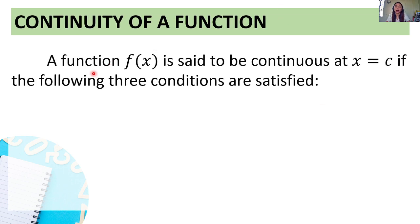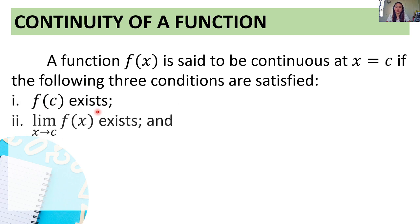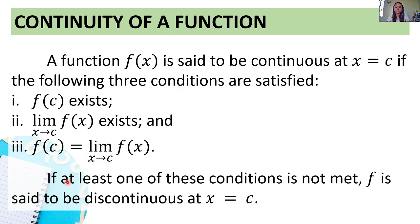Continuity of a function: a function f of x is said to be continuous at x equals c if the following three conditions are satisfied. First, f of c exists. Second, the limit of f of x as x approaches c exists. And lastly, f of c is equal to the limit of f of x as x approaches c. If at least one of these conditions is not met, f is said to be discontinuous at x equals c.